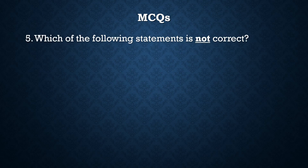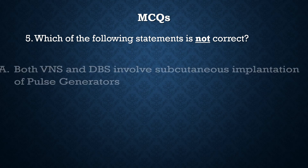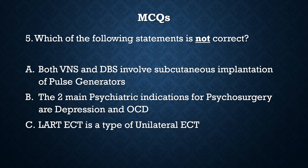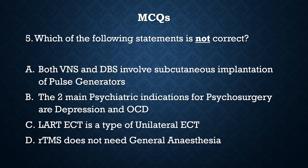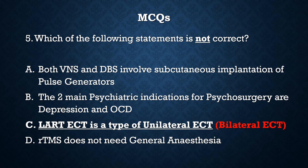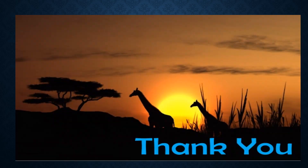Question 5: Which of the following statements is not correct? The correct answer is C — LART ECT is a type of unilateral ECT is the incorrect statement. The other three statements are correct. LART ECT is in fact a type of bilateral ECT. That brings us to the end of this presentation. Hope you found the information useful. Thank you for watching.